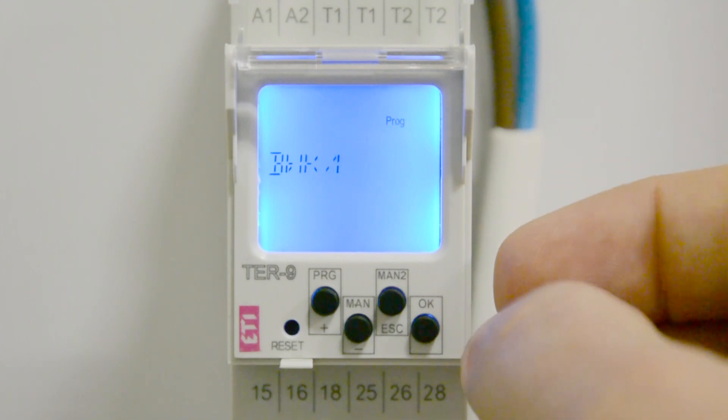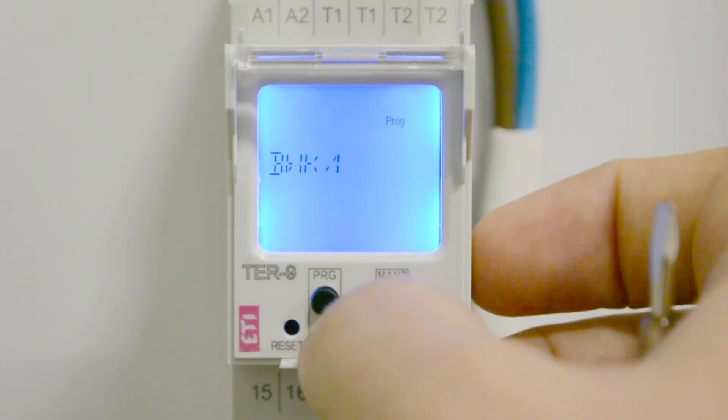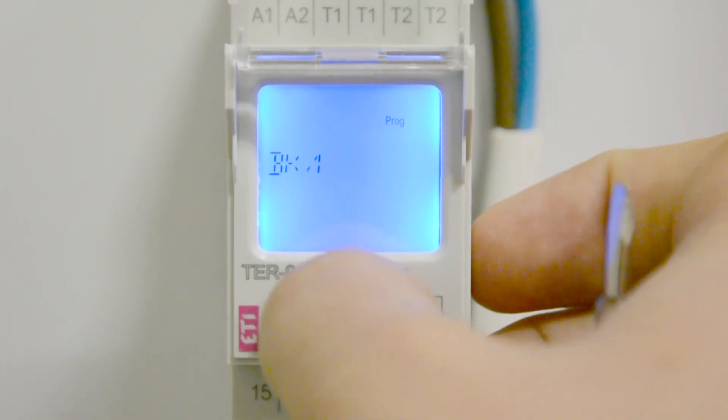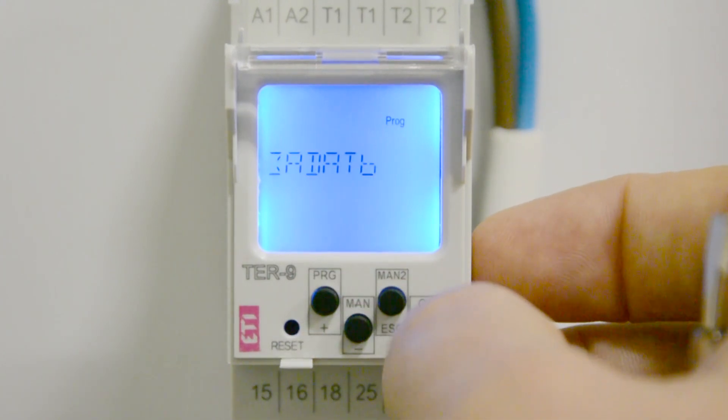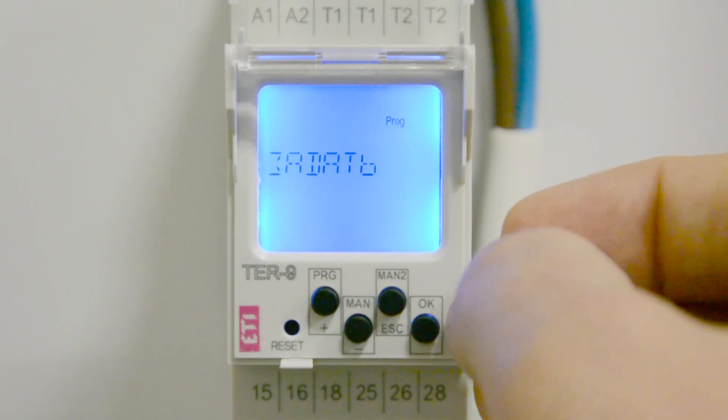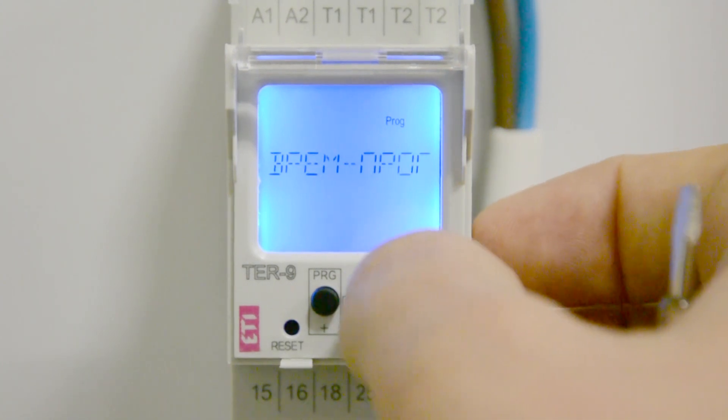Now set the state of the contact group or the required temperature level. You can transition between the state of the contact group and the required temperature level by using the plus and minus buttons.